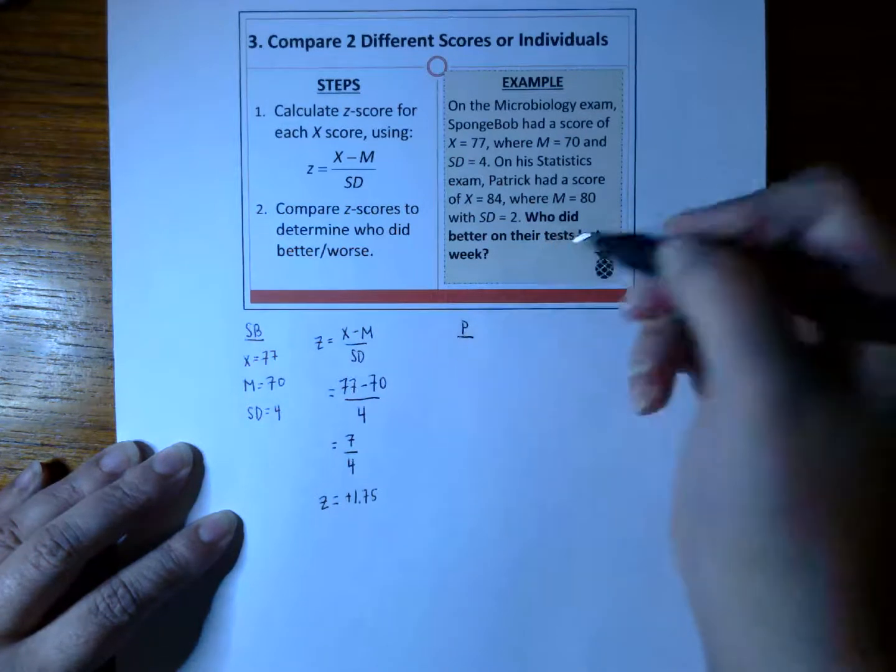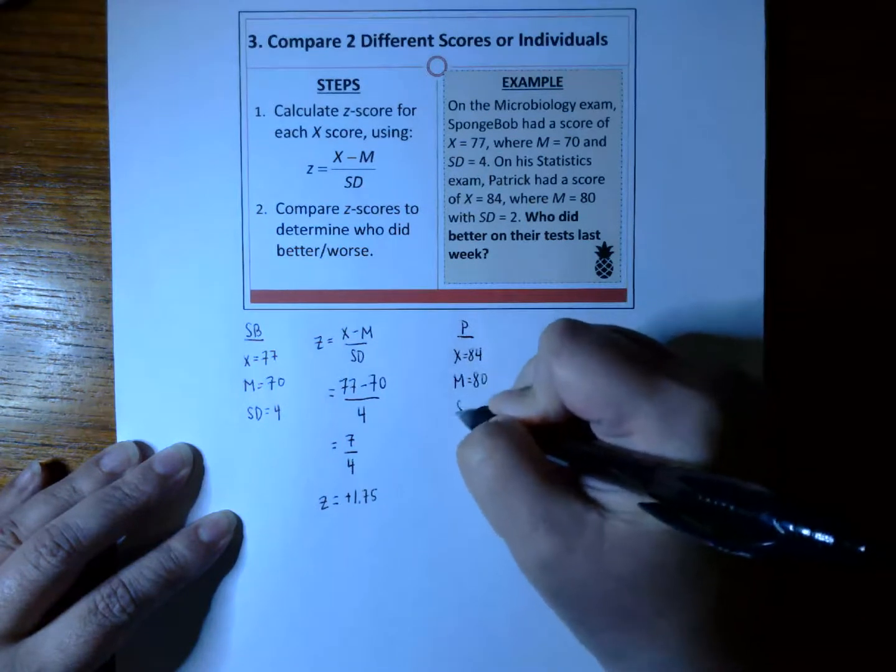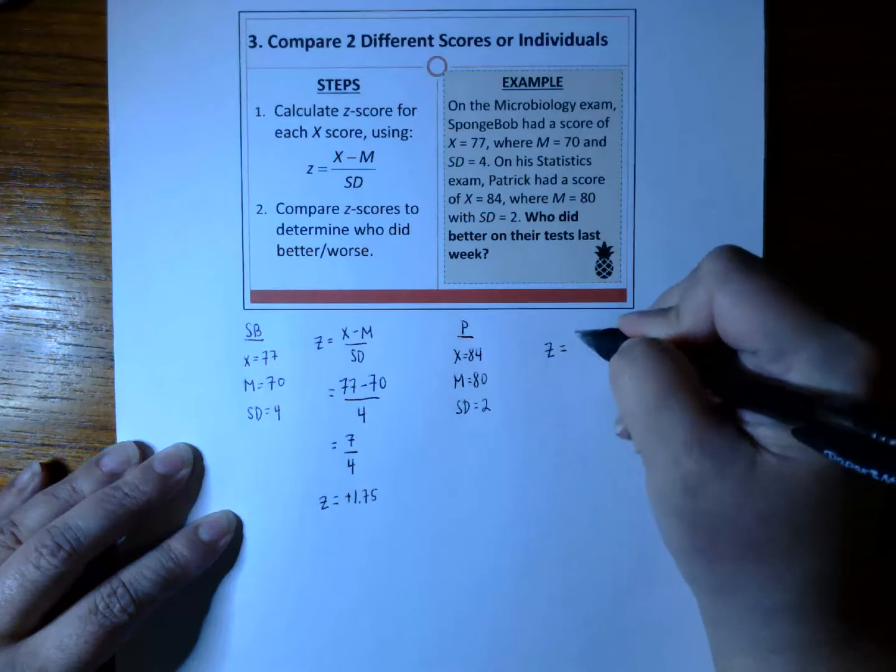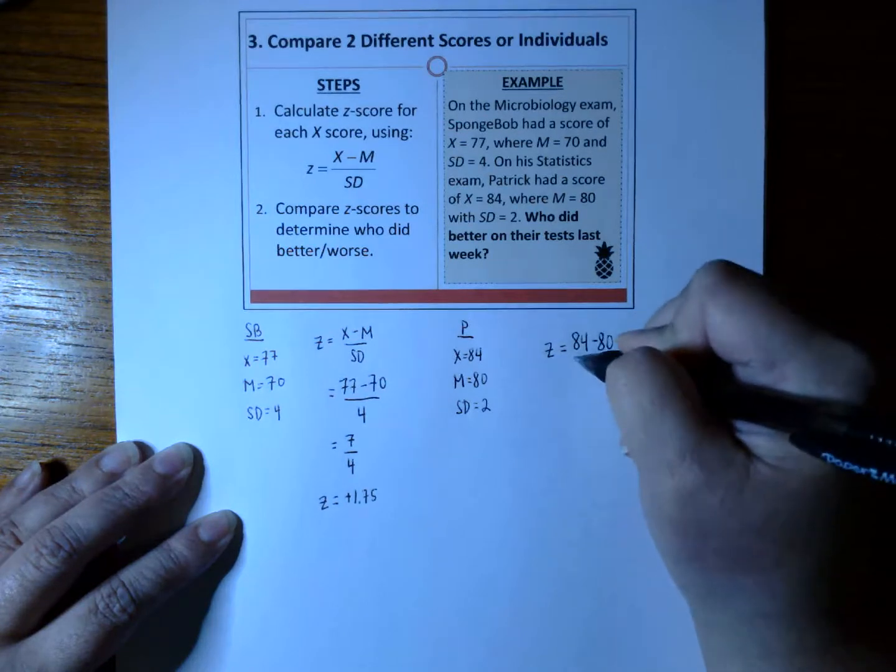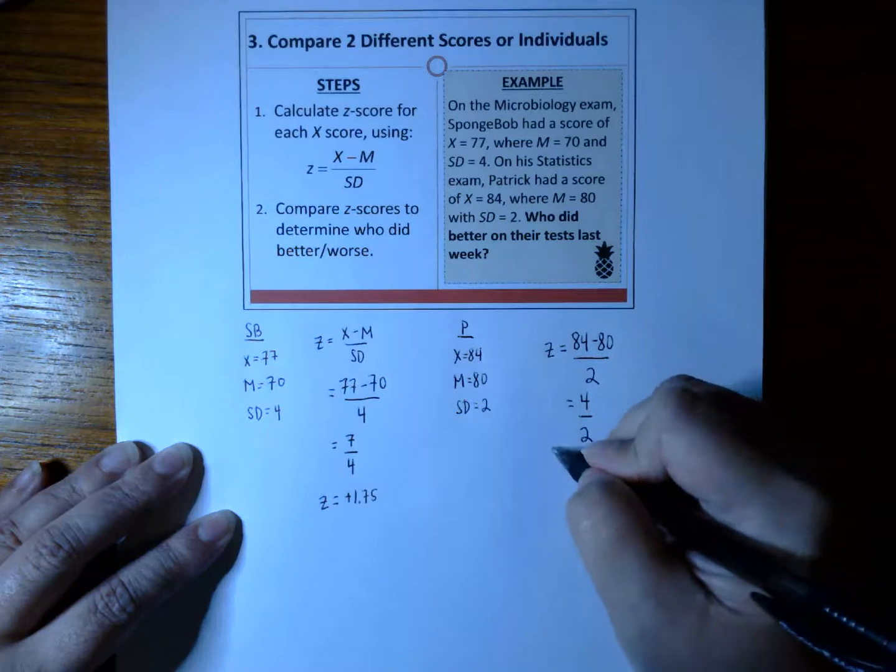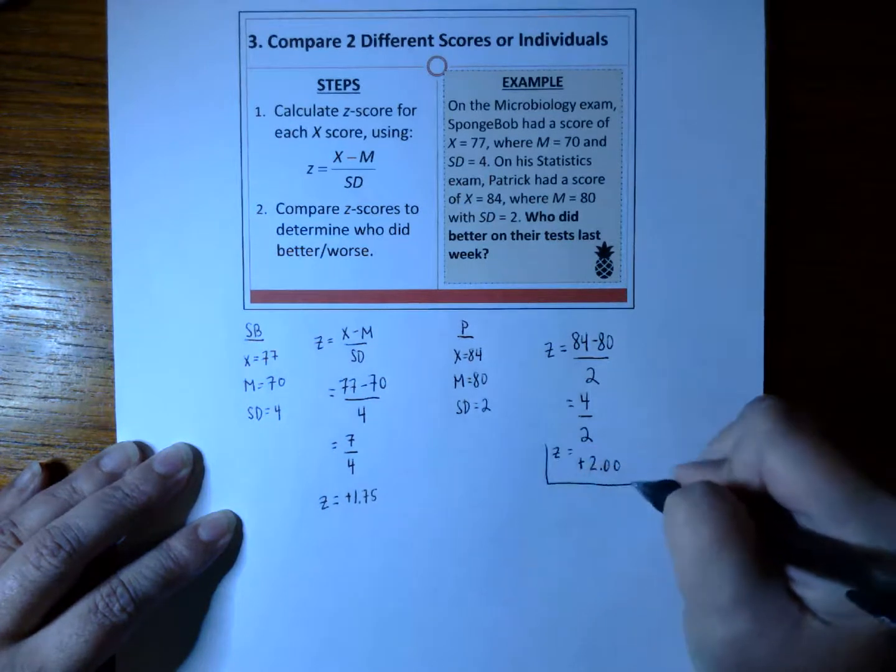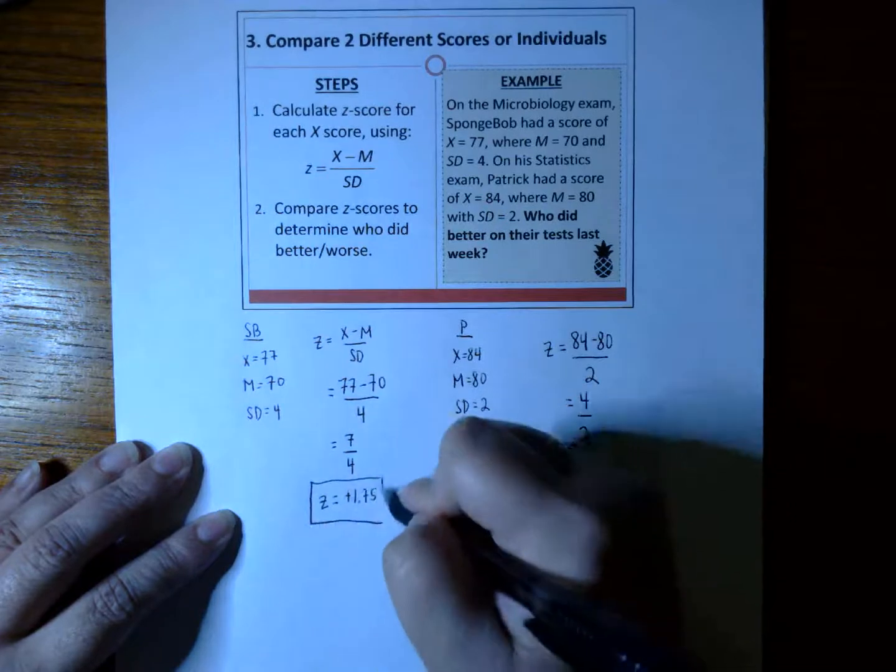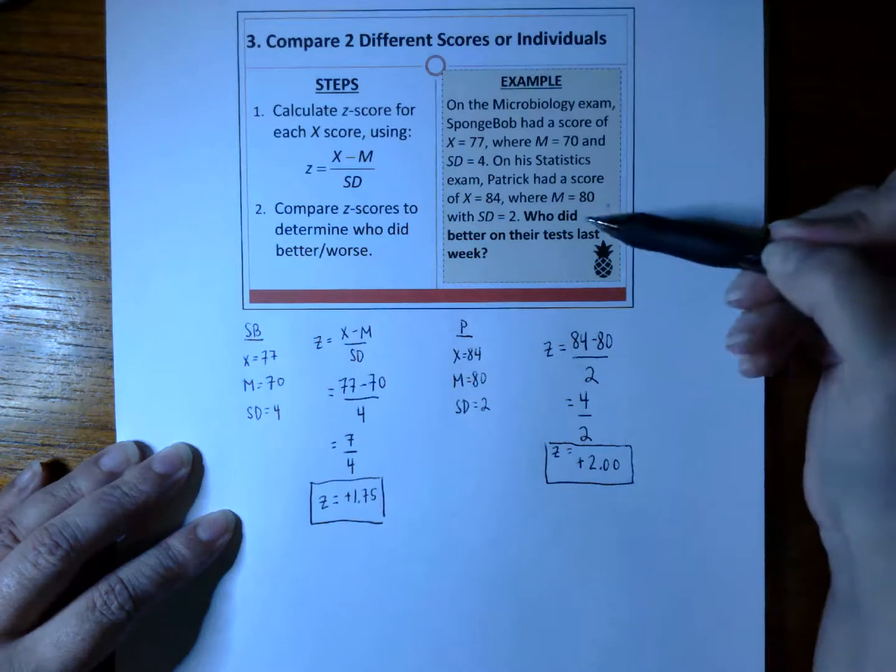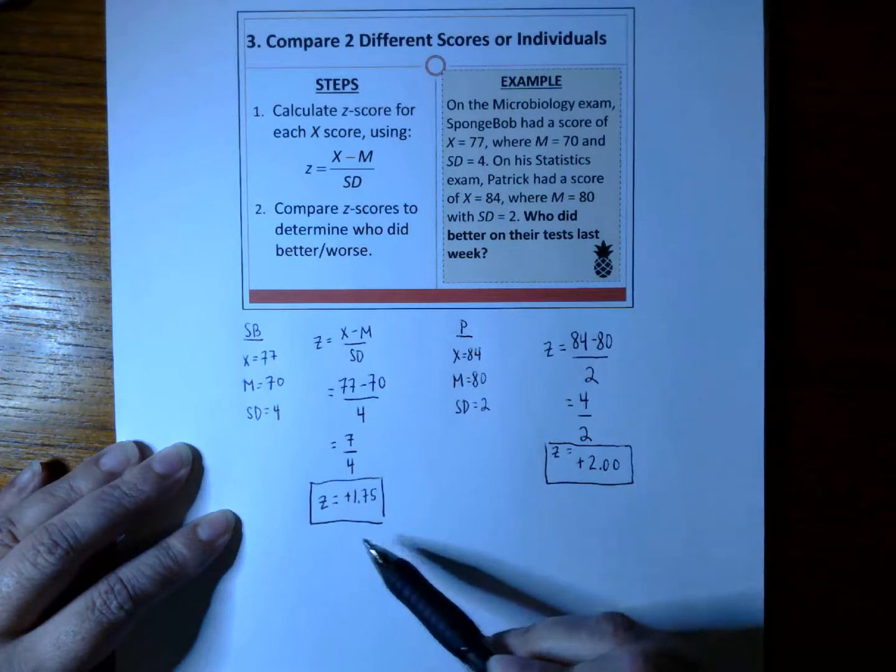But that's SpongeBob. We got to do Patrick. Over here we do Patrick. Patrick had a score of 84 with a mean of 80 and an SD of 2. Let's plug it into the formula. We have 84 minus 80 divided by 2. 84 minus 80 is 4. 4 divided by 2 gives us a Z-score of plus 2. These are our two final answers. But the question is not what were their Z-scores. The question is, who did better on their test last week? Who did better? SpongeBob or Patrick?